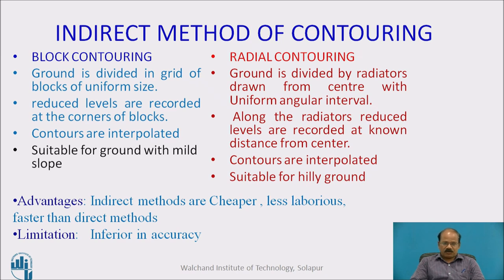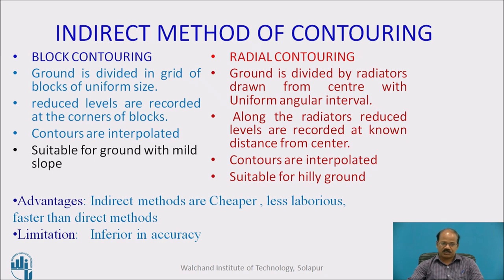There is a second method called the indirect method of contouring, which is further subdivided into block contouring and radial contouring. The whole area can be divided into a number of squares or blocks, and data is collected for the corners of each block regarding its reduced level — that is the block contouring procedure. The area can also be divided into radiators at some angular interval, and staff readings are taken at regular intervals along the radiators. Remember, in the indirect method interpolation is mandatory, while in the direct method interpolation is not required at all.